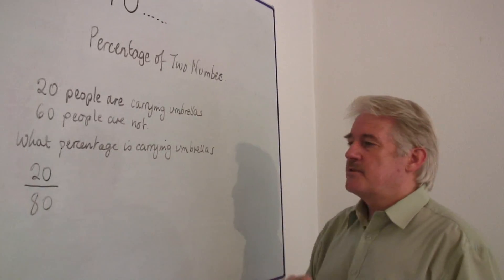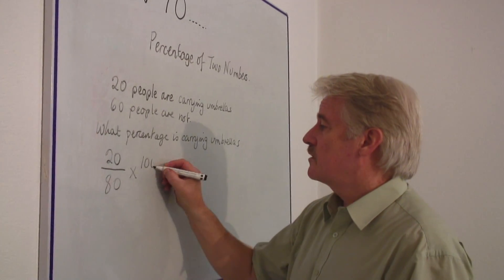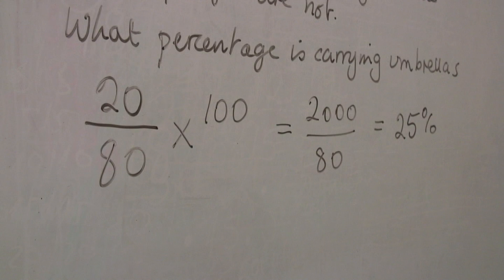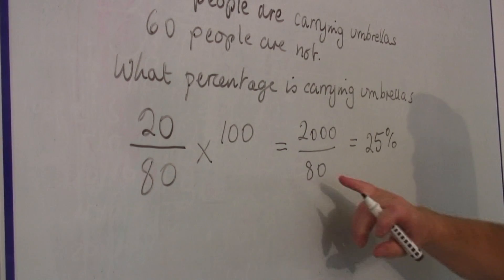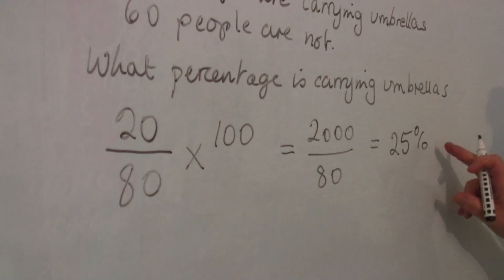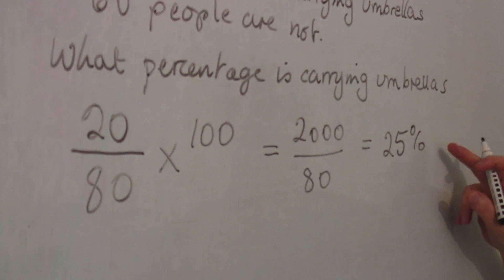To calculate a percentage, we simply multiply by a hundred. So if I multiply it by a hundred, I will get on the top two thousand divided by eighty. And this percentage comes out to twenty-five percent. You can cancel the zeros — eights into two hundred gives you twenty-five. So twenty-five percent of people are carrying umbrellas.